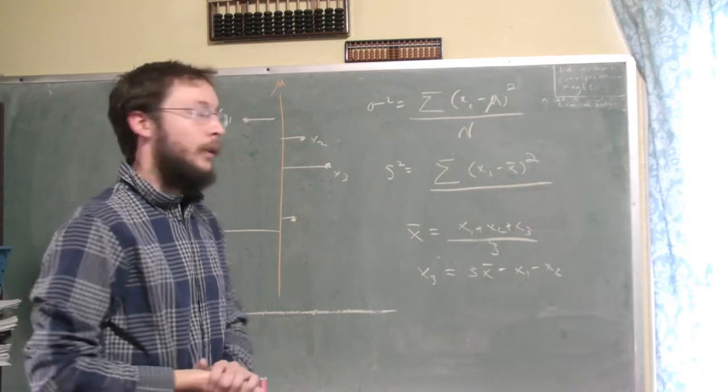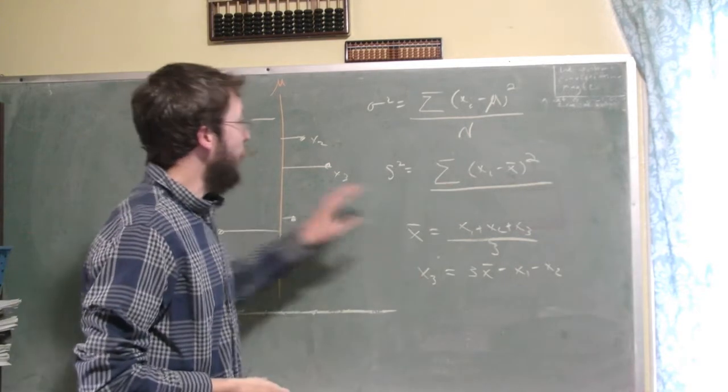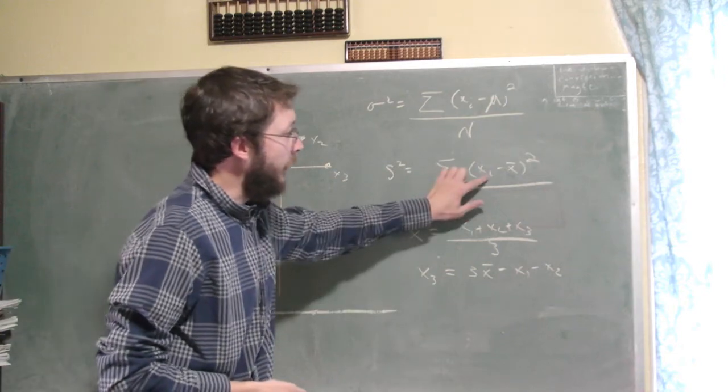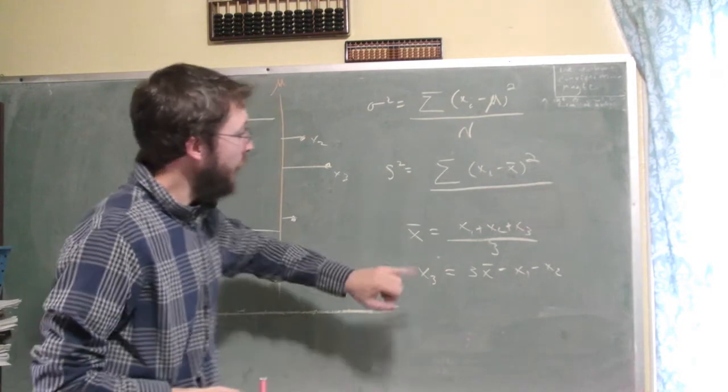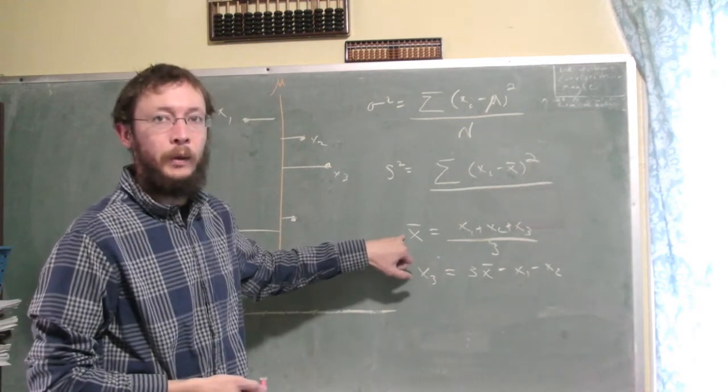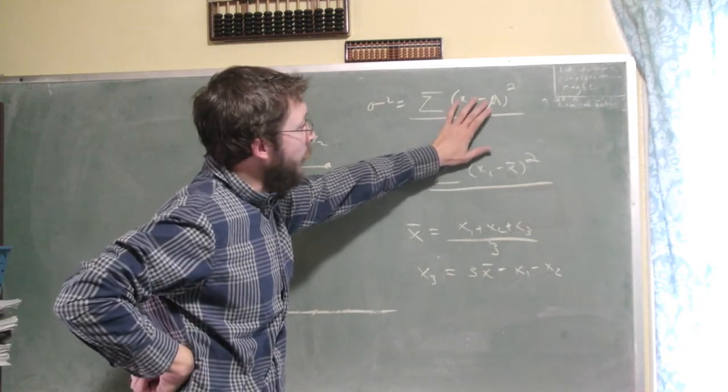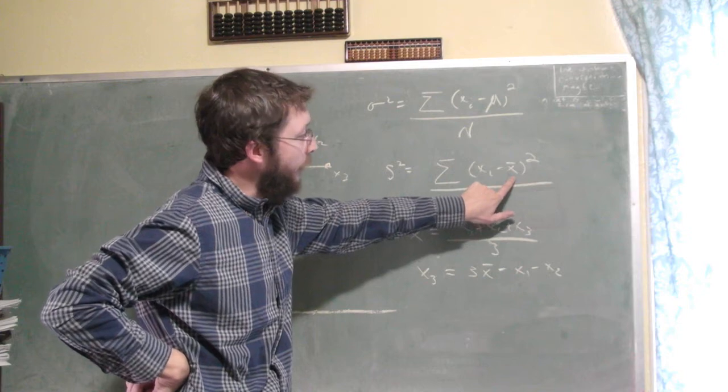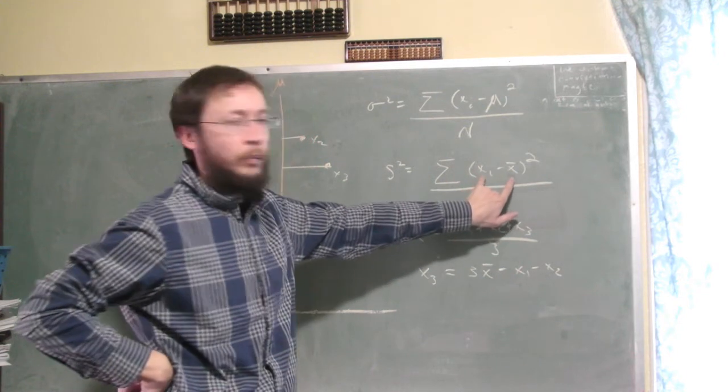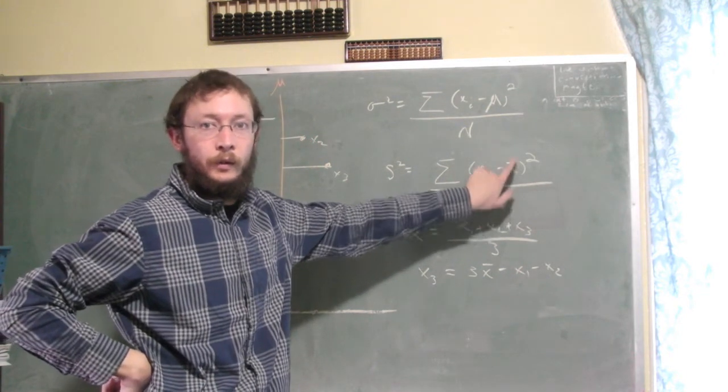So the reason that this isn't correct is because we don't actually have three random variables here in this formula, because what happens is we have this relation between the variables. We say, I don't know the population mean, so I can't compute the squared distance, but what I can do is I can compute an estimate of the squared distance using that sample mean.